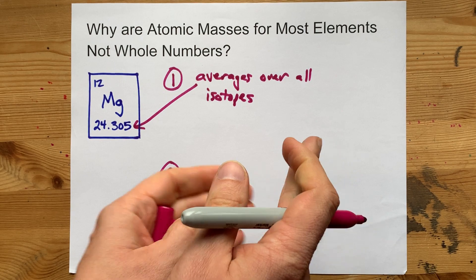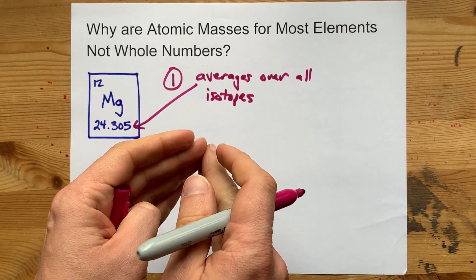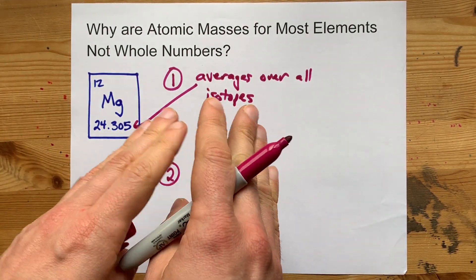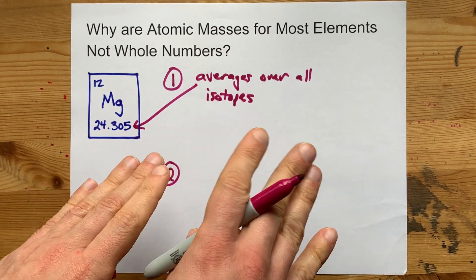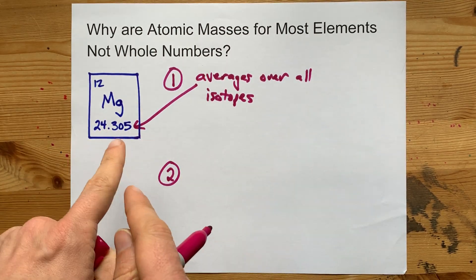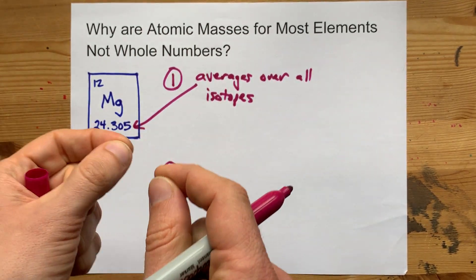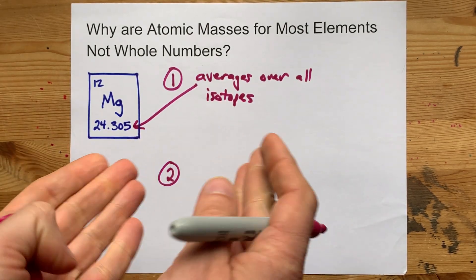So when you average all the magnesium atoms that you can find in the world, you're obviously going to get a decimal because you're averaging 24s and 25s together. You're going to get something in between.